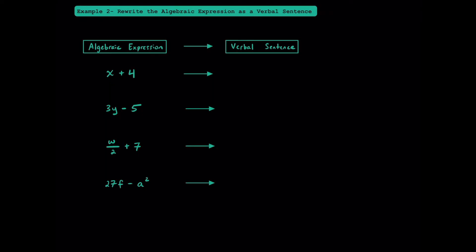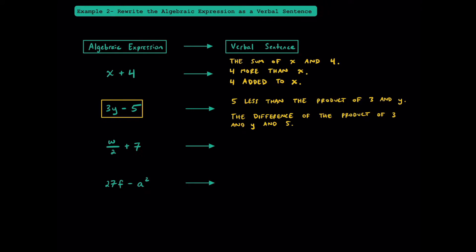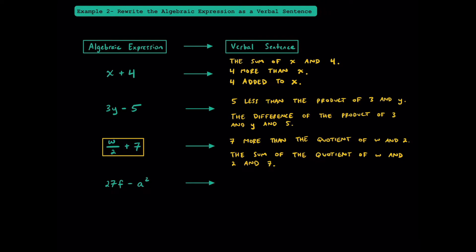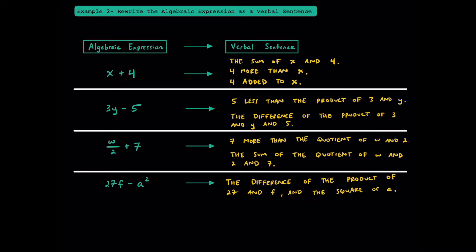In example 2, let's rewrite each algebraic expression as a verbal sentence. Pause the video to see if you can come up with some on your own. For x plus 4, you could say: the sum of x and 4; 4 more than x; or 4 added to x. For 3y minus 5: 5 less than the product of 3 and y, or the difference of the product of 3 and y and 5. For w over 2 plus 7: 7 more than the quotient of w and 2, or the sum of the quotient of w and 2 and 7. And for the last one: the difference of the product of 27 and F and the square of A.